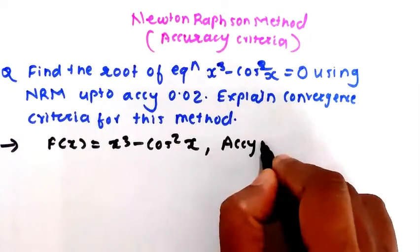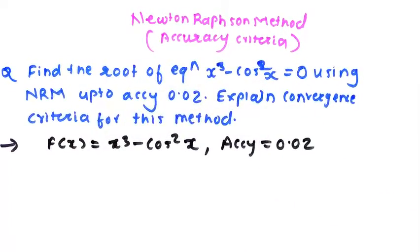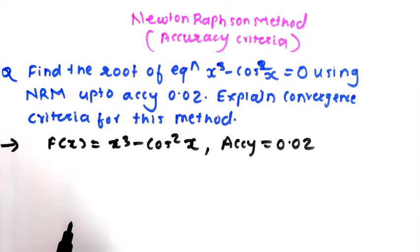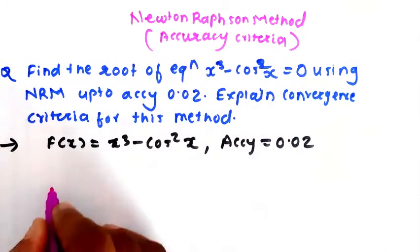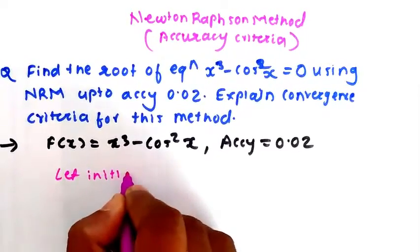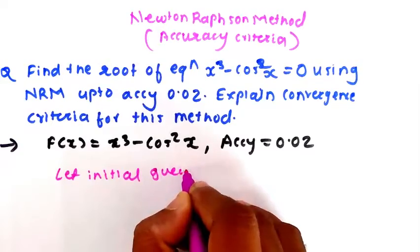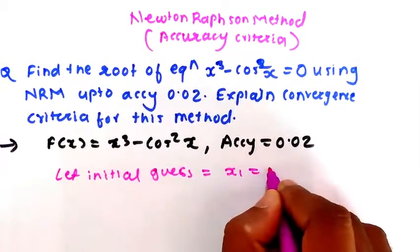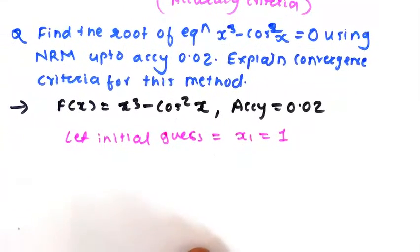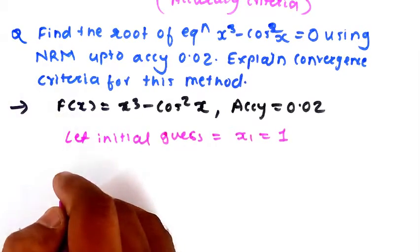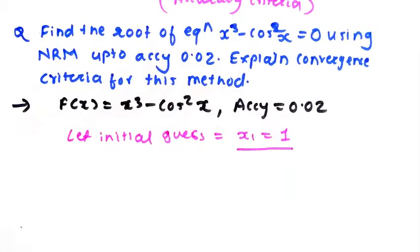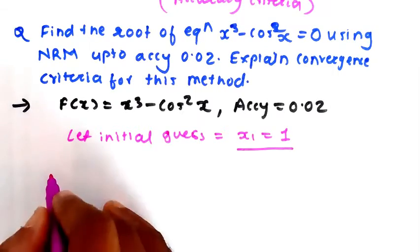The accuracy is given as 0.02. Next step is to guess the initial guess. Let the initial guess x₁ = 1. We have to check whether this initial guess is right or wrong, since we have only guessed x₁ = 1.